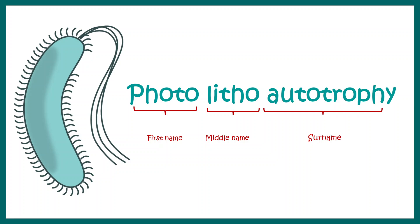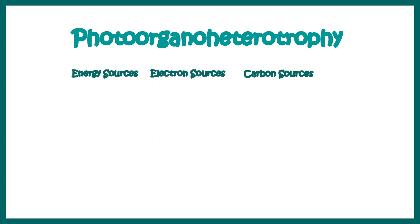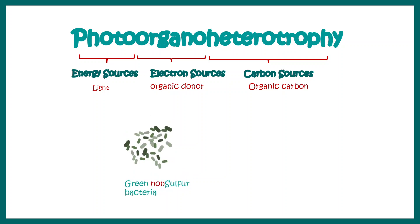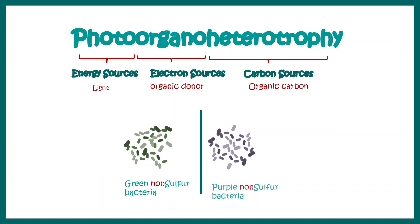The next category is photo-organo-heterotrophy. Looking at the term 'photo,' you can easily understand the energy is derived from light. 'Organo' means it is deriving its electrons from an organic donor, and 'heterotrophy' means it uses organic carbon instead of CO2. Some examples are green non-sulfur bacteria and purple non-sulfur bacteria.